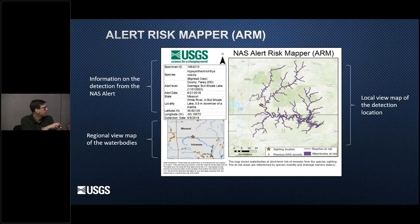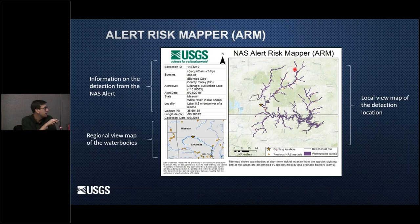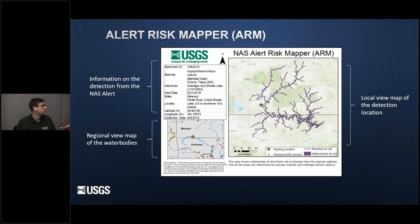These maps include information from the alert, plus a regional view of where the observation is located. In this case, this is a bighead carp record in the White River, just over the border in Missouri from Arkansas. You can see where all the other observations of the species are in the region — shown as little diamonds. We also show the actual location including the potential areas at risk — so if this species were dispersing within the region, where might you want to go looking for it? This helps give managers a narrower view of where they might want to focus survey efforts if they're looking for this taxon in this area.